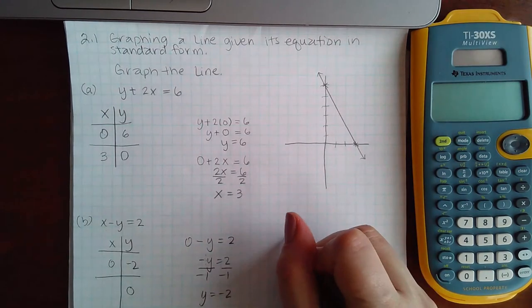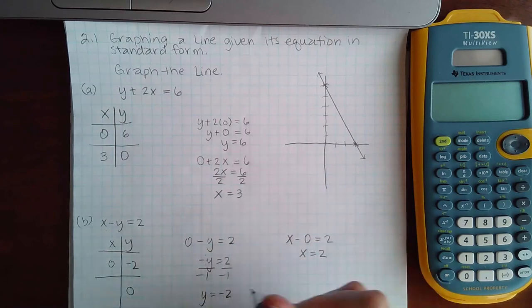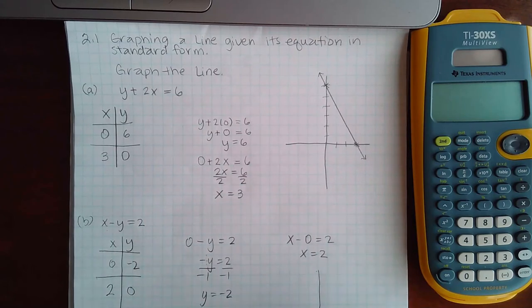Then when I plug in 0 for y that's just x equals 2, which means I get positive 2. So when we go to graph it's 0 and negative 2 here and then positive 2 and 0 which is there.